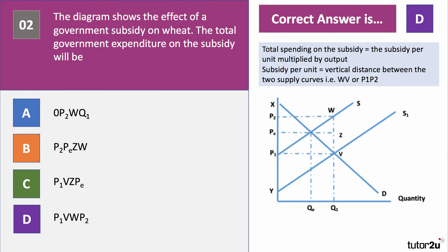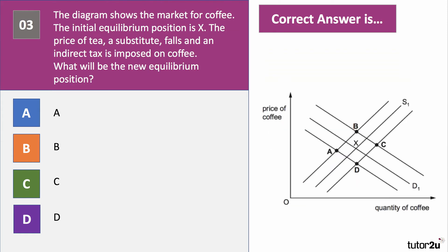The total spending on the subsidy is subsidy per unit multiplied by output. Question three: the diagram shows the market for coffee. The initial equilibrium is point X. The price of tea, a substitute for coffee, goes down, and an indirect tax is imposed on coffee producers. The question is: what is the new equilibrium position — A, B, C, or D? Press the pause button and have a go at question three.